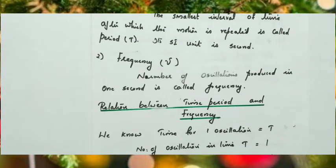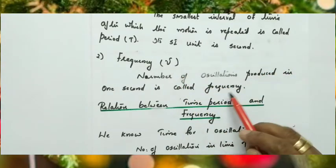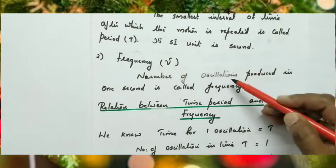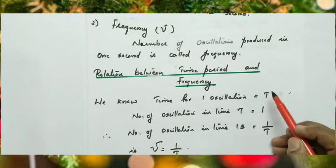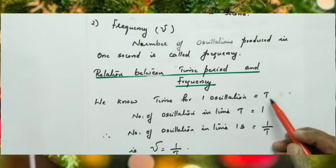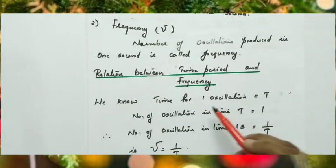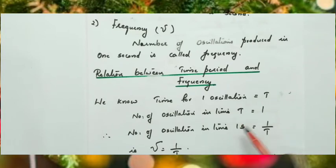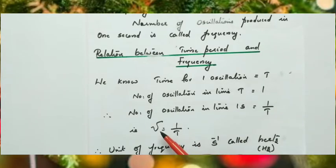The second term is frequency. The number of oscillations produced in one second is called frequency. It is usually represented by the letter nu (ν). Now, what is the relation between time period and frequency? Time for one oscillation is T. Number of oscillations in T seconds is one, so number of oscillations in one second is 1/T. From the definition, number of oscillations in one second is frequency. Therefore, the relation between frequency and time period is: ν = 1/T. The reciprocal of time period is called frequency.